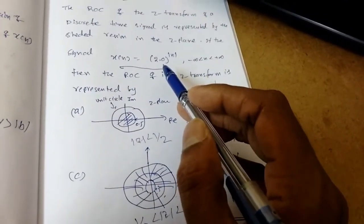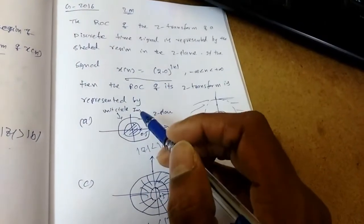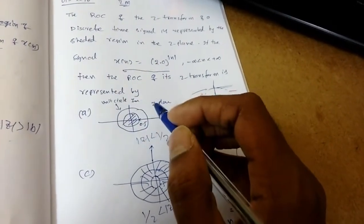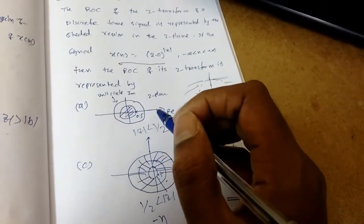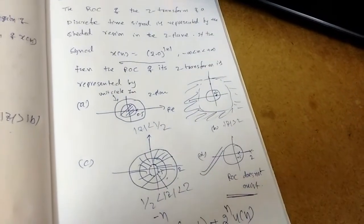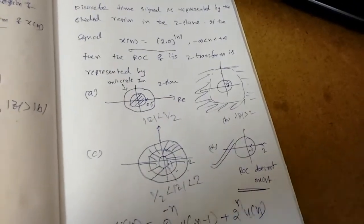So that is about the ROC equations from the previous cases. In the next lecture, you will see properties of the Z transform.